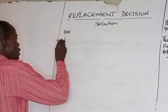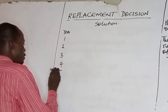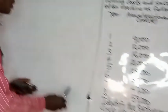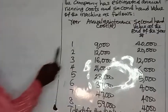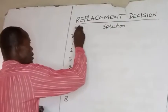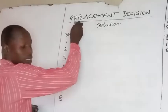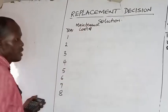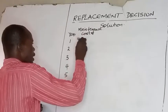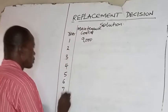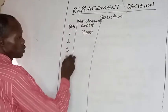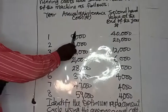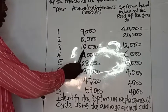Setting up the solution table for years 1 through 8, we list the annual maintenance costs: Year 1 — $9,000; Year 2 — $12,000; Year 3 — $16,000; Year 4 — $21,000; Year 5 — $28,000; Year 6 — $37,000; Year 7 — $47,000; Year 8 — $59,000.